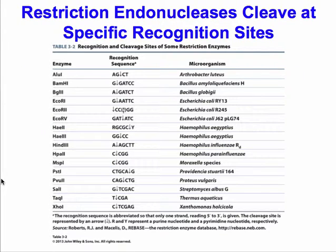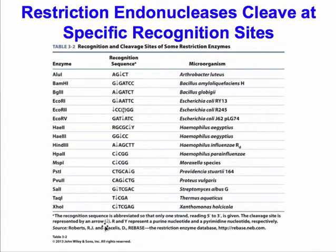There are over 4,000 restriction enzymes that we know of, and they recognize about 270 different types of recognition sites or sequences within the genome. What's important to know is that these enzymes are very specific — they search within the DNA and only cut between particular base pairs.